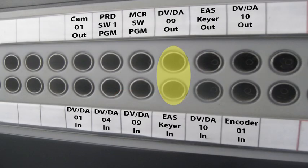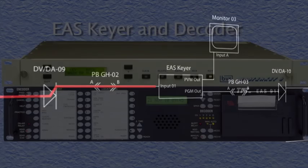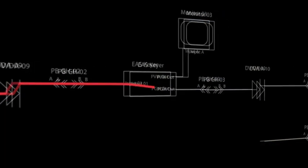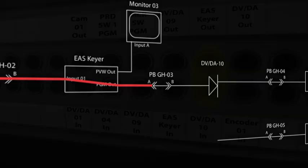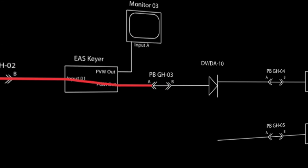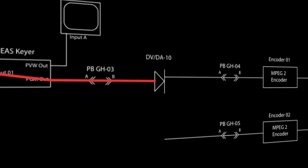The next video DA distributes the program output from the master control switcher. Our fourth patch point takes the output of the video DA and sends it to the EAS keyer input. The fifth patch takes the EAS keyer out and sends it to DVDA10 input. DA10 then distributes the output of the EAS keyer.